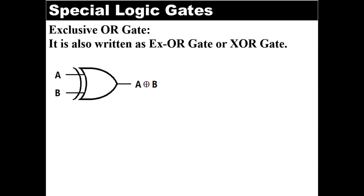If both inputs are the same then output will be low or 0. That is, if both inputs are 0 or low then output of this gate will be 0, and also when both inputs are 1 or high then again output will be 0. So we can say that XOR gate represents the inequality function — that is, output is high or 1 if inputs are not equal to each other.